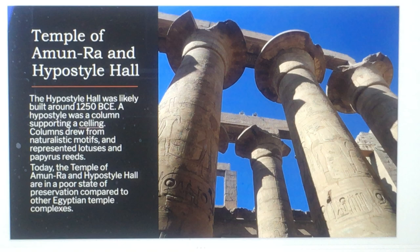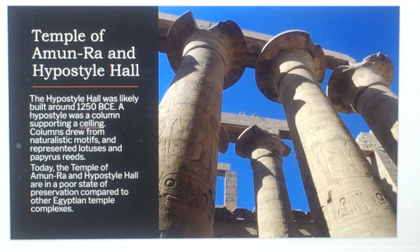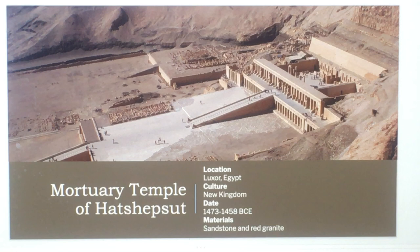The Hypostyle Hall was likely built around 1250 BCE. A hypostyle hall features columns supporting a ceiling; the columns drew from naturalistic motifs representing lotuses and papyrus reeds. Today the Temple of Amun-Ra and Hypostyle Hall are in a poor state of preservation compared to other Egyptian temple complexes.